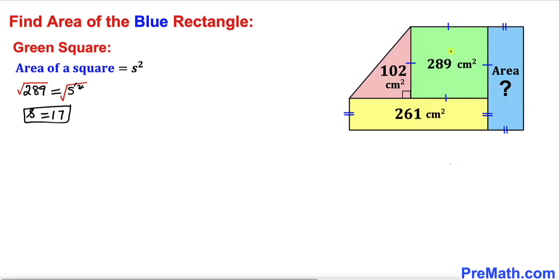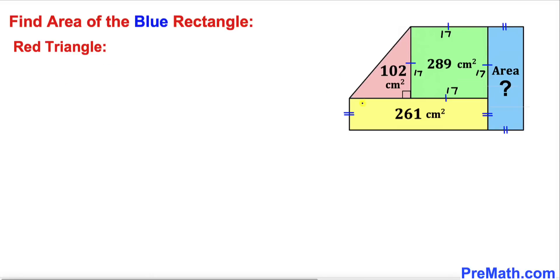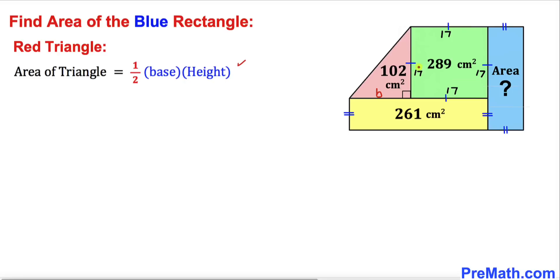Therefore the side length of this green square is 17 units on all sides. Now let's focus on this red right triangle and recall the area of a triangle formula: area equals one half times base times height. Let's suppose this side of the right triangle is base b and this is our height h. The height h is going to be equal to 17 centimeters, and the area of this right triangle has been given to us as 102 centimeters squared.